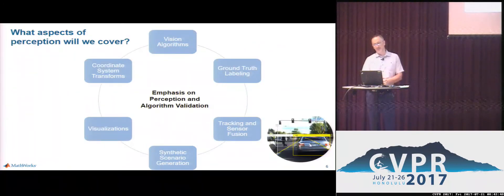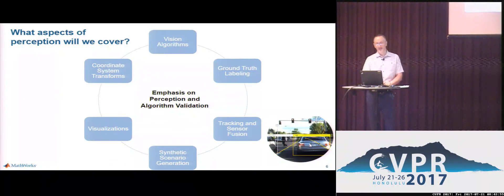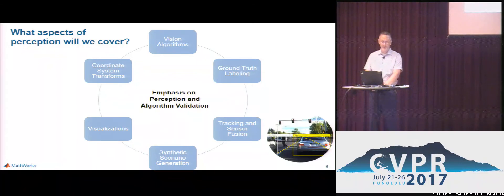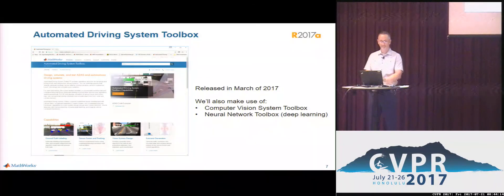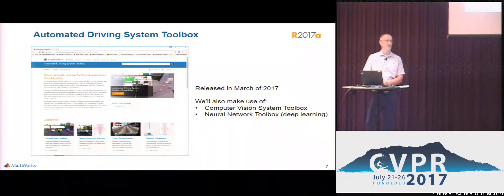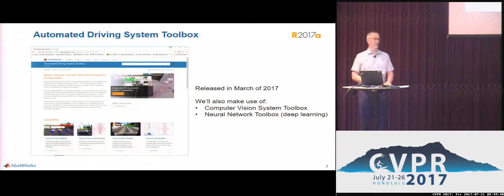In terms of perception, we'll talk about vision algorithms — deep learning and some classical techniques — as well as the monocular camera system, coordinate system conversions, ground truthing, and tracking and sensor fusion, with emphasis on perception and algorithm validation. Throughout the session, I'll be showing you the Automated Driving System Toolbox released in March 2017. We'll also take advantage of the Computer Vision Toolbox and the Neural Network Toolbox for deep learning.